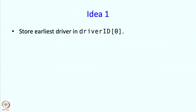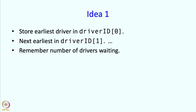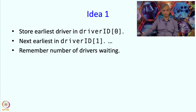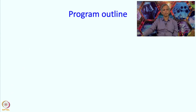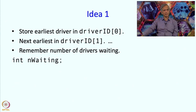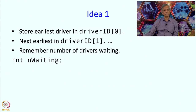Here is the first idea. The earliest driver who has not yet been served is stored in driverID[0], the next earliest in driverID[1], and so on. We also remember how many drivers are waiting using a variable called nWaiting. These are the important variables — the array driverID and the variable nWaiting.